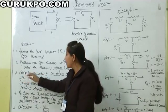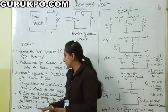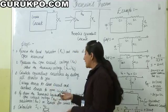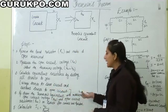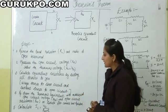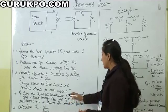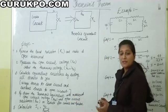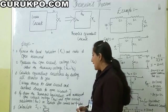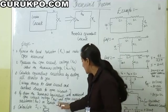Step 3: Calculate equivalent resistance by setting all the sources to zero. That means if we have a voltage source, make it a short circuit, and if we have a current source, make it an open circuit. Step 4: Redraw the Thevenin's equivalent circuit with the measured open circuit voltage VOC, or VTH, and open circuit resistance RTH in series.